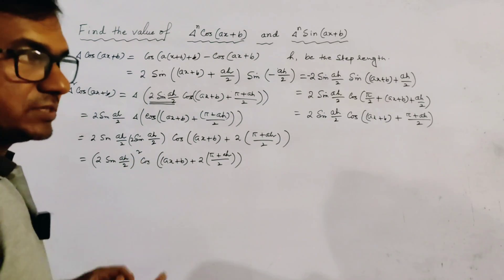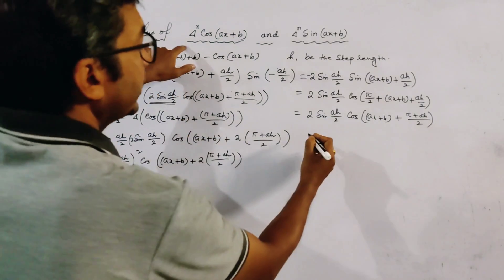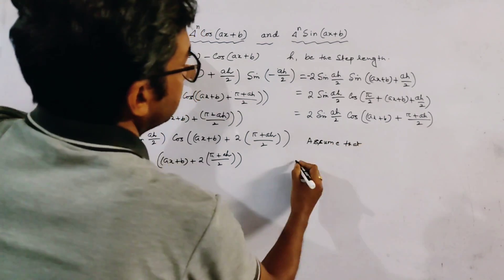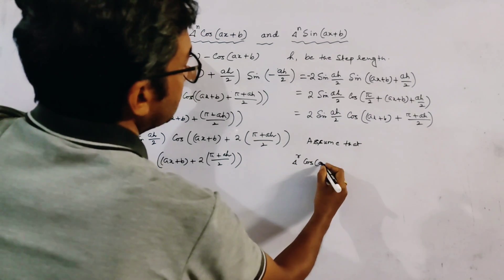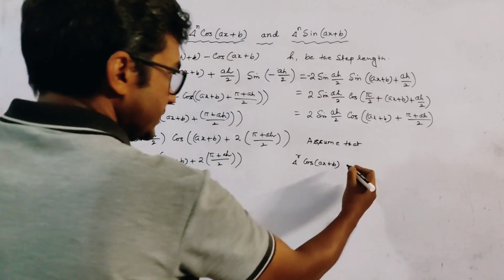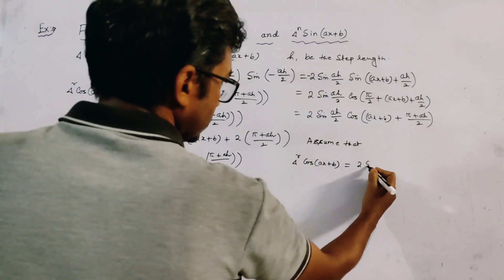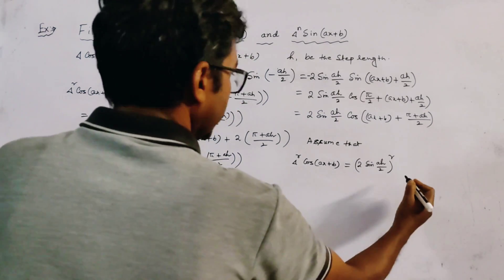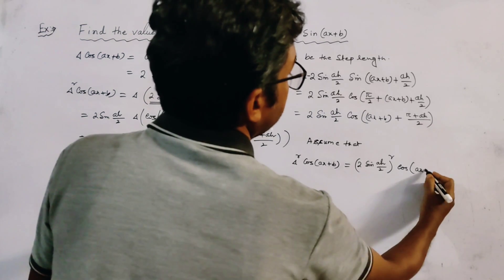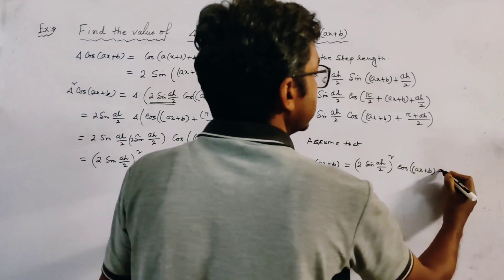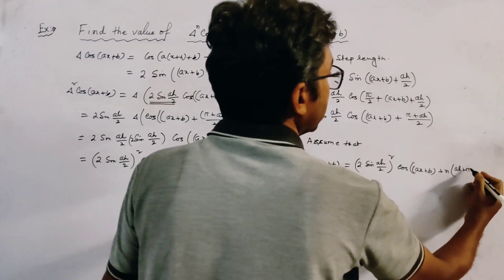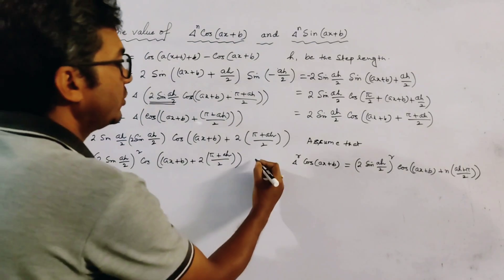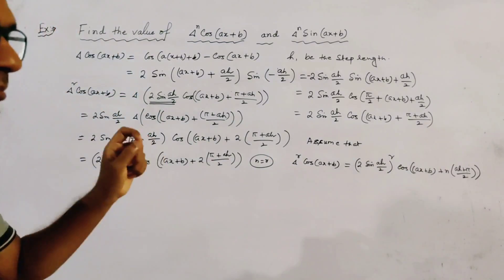To use the principle of mathematical induction, we assume that delta to the power r of cos(ax + b) is given by (2 sin(ah/2))^r times cos(ax + b + r·(ah + π/2)). We assume this relation holds for n equal to r.